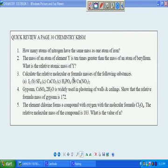The mass of an atom of element Y is 10 times greater than the mass of an atom of beryllium. What is the relative atomic mass of Y? We have to check the value of beryllium. Alright, so Y is 10 times of beryllium.